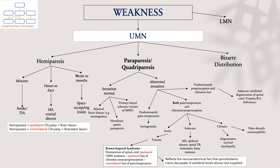With normal sensation, the differentials to think about would be bilateral brain disease such as meningioma, hereditary spastic paraparesis, and primary lateral sclerosis — a variant of the motor neuron disease family. We are strictly speaking about paraparesis and quadriplegia with normal sensation here.